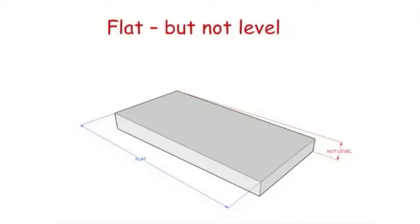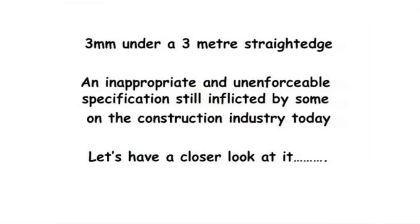Now it's an issue to see how you can control where you have level and flatness, and what limits you're prepared to put to it. Prior to 1988, we had the ubiquitous straightedge. The straightedge ends up being a specification which Bryan and the Cement and Concrete Institute — and now the Concrete Institute — would classify as inappropriate and unenforceable, because it actually means very little bordering nothing.